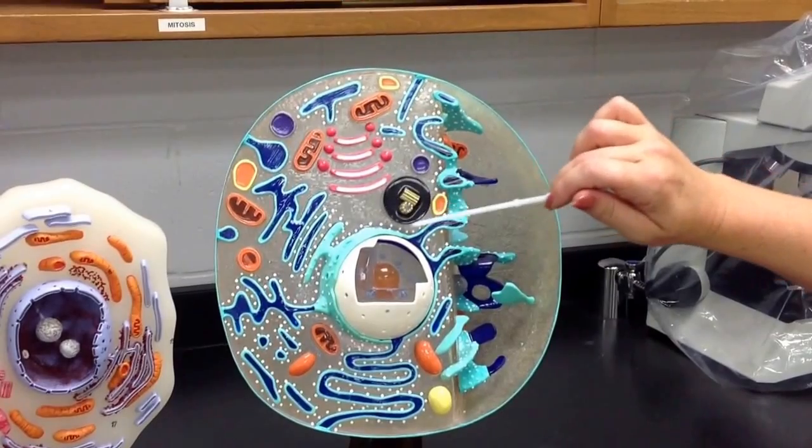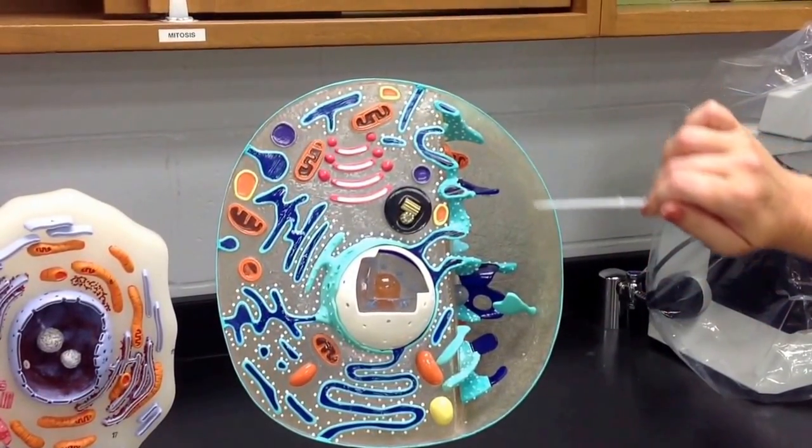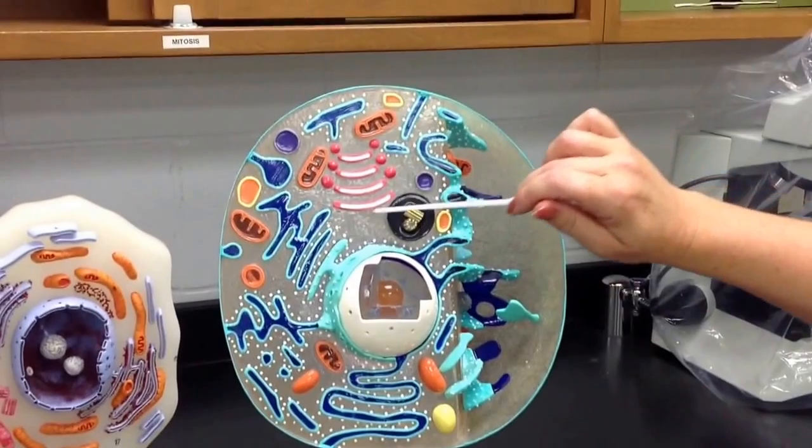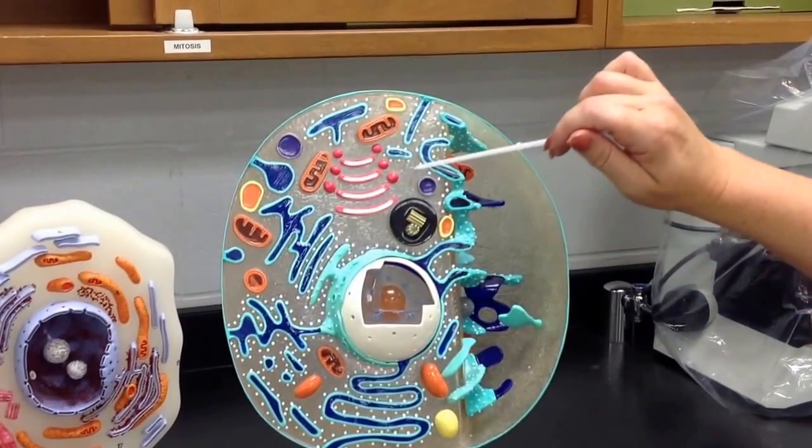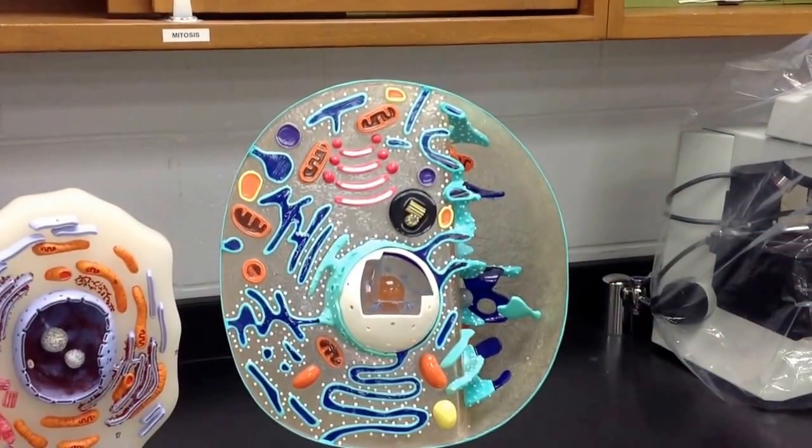And then of course the plasma membrane around the outside, the cytosol, all the watery liquidy fluid inside the cell that all of these things are floating around in. And that is your cell anatomy.